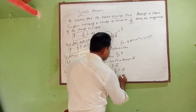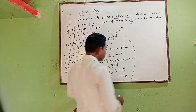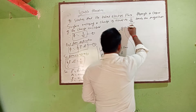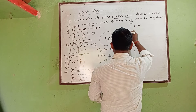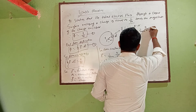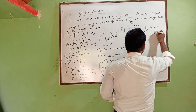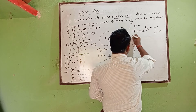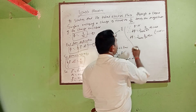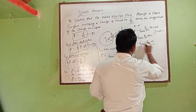Since E and dS lie along the same direction, theta equals 0 degree. Therefore d phi equals 1 by 4 pi epsilon naught times Q by r square times dS times cos 0. Since cos 0 equals 1, we get d phi equal to 1 by 4 pi epsilon naught times Q by r square times dS. This is the electric flux through the elementary portion.